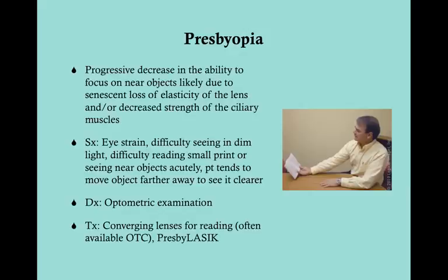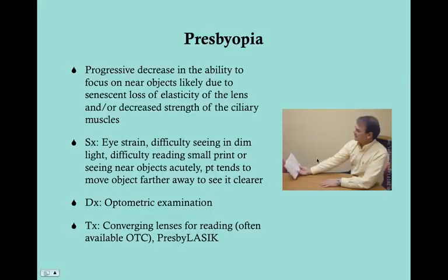When the eye is tired the ciliary muscle can become fatigued, producing symptoms similar to presbyopia even in younger patients. The symptoms of presbyopia include eye strain, difficulty seeing in dim light - since ciliary muscles also contribute to pupil dilation - difficulty reading small print, and difficulty seeing near objects. Patients will move objects farther away to see them more clearly. As shown in the picture, nobody normally reads a book held that far from their face - that's a classic presbyopia sign.